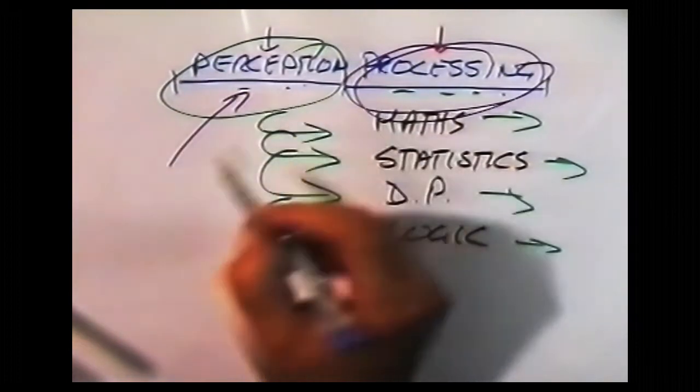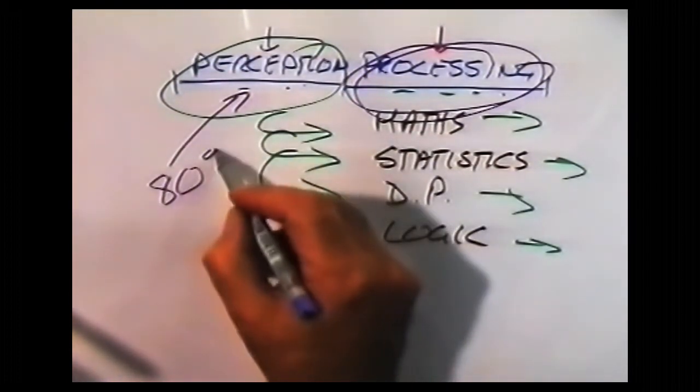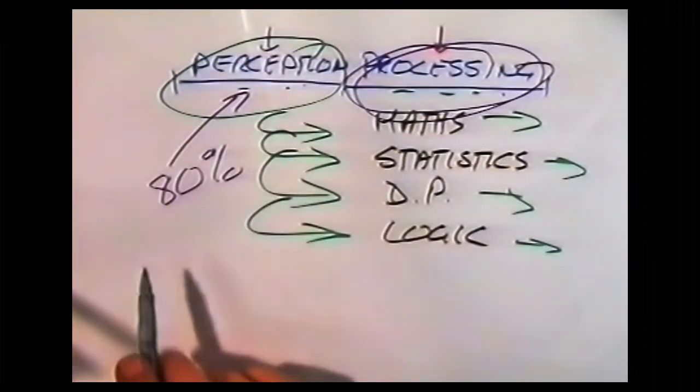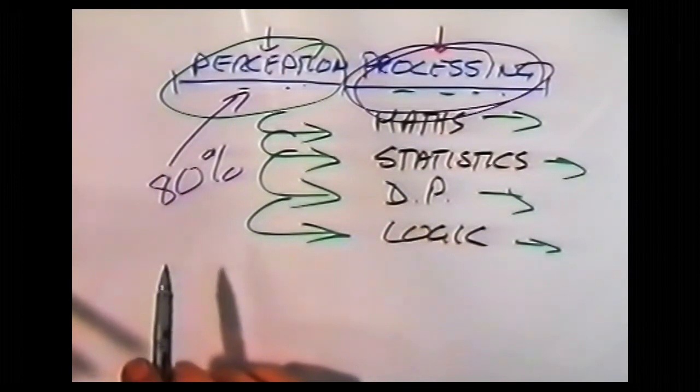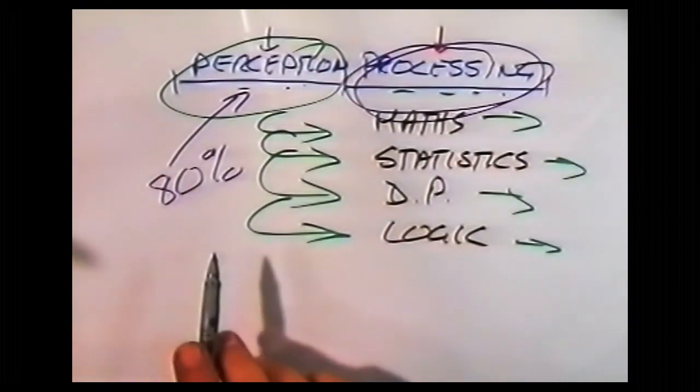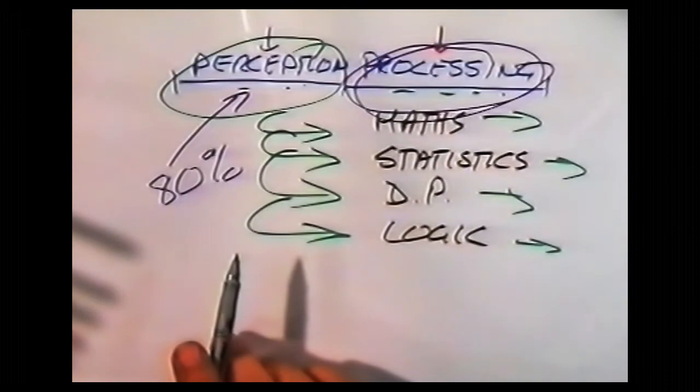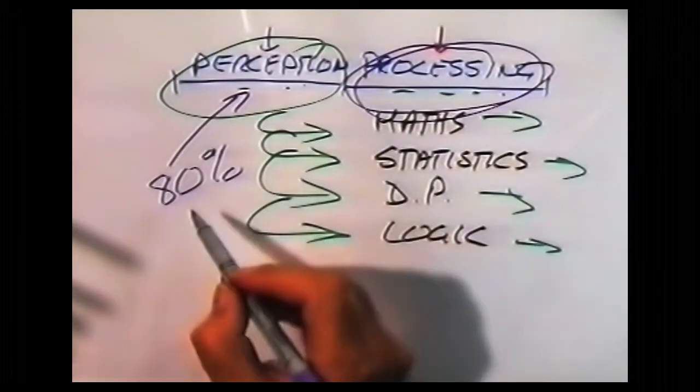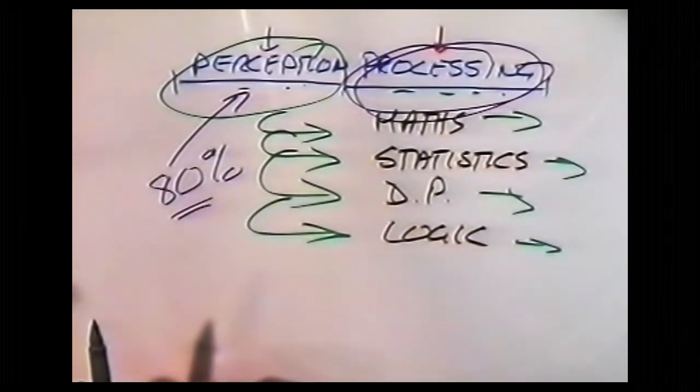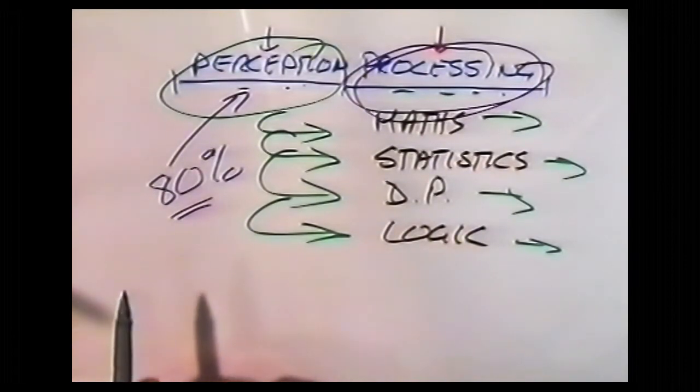something like 80 to 90 percent of the mistakes in thinking, are mistakes of perception. Mistakes of processing are quite rare outside highly technical subjects. Mistakes of perception are abundant. Professor David Perkins at Harvard University did research on this and showed exactly that.